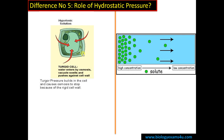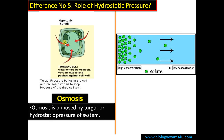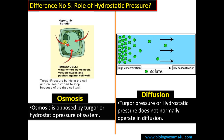Difference number five, the final difference, is the role of hydrostatic pressure. Once water enters into the cell by osmosis, the vacuole swells up and the cell becomes turgid. There will then be a pressure that opposes osmosis, which is called turgor pressure. Turgor pressure prevents the breakage of the cell and prevents further entry of water by osmosis. So osmosis is opposed by turgor pressure or hydrostatic pressure of the system. Whereas in the case of diffusion, turgor pressure or hydrostatic pressure does not have a role.